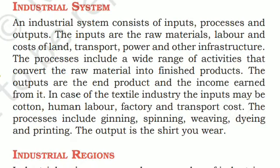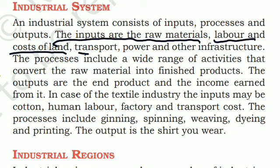An industrial system consists of inputs, processes, and outputs. Inputs are the raw material, labor, cost of land, transport, power, and other infrastructure. The processes include a wide range of activities that convert the raw material into finished products. The outputs are the end product and the income earned from it.